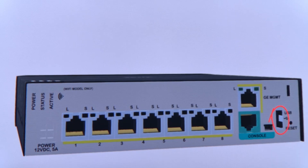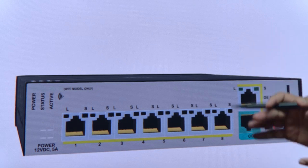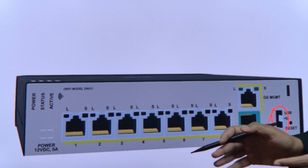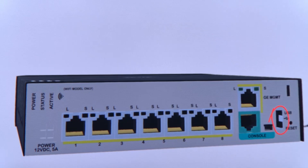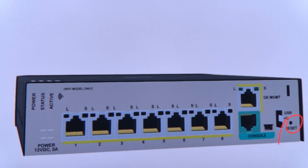We also have a USB port. Using this USB port, you can copy files from the firewall to a USB drive, or copy license files and IOS software images onto the firewall. There is also a reset button — a long press of about five seconds will factory-reset the firewall to its default configuration.